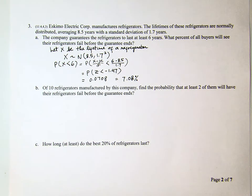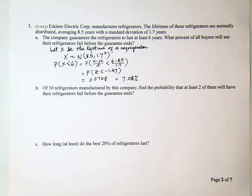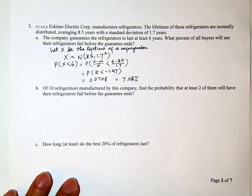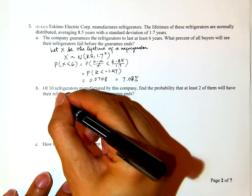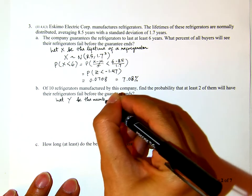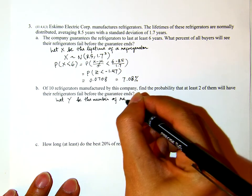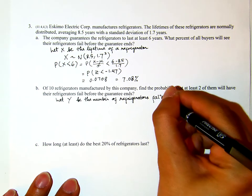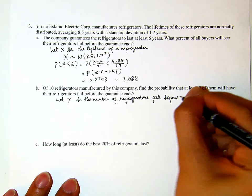Part B: If 10 fridges are manufactured by this company, find the probability that at least 2 of them will have their fridge fail before the guarantee ends. Now you have 10 refrigerators. The probability that each one fails before the guarantee ends is from Part A — 7.08%. Let's define a new variable: let Y be the number of refrigerators that fail before the guarantee ends.